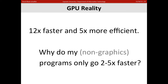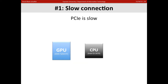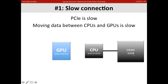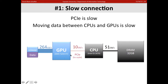There are a bunch of reasons for this. The first is that PCIe is slow — moving data between CPUs and GPUs is slow. CPU DRAM offers about 51 gigabytes per second, GPU memory offers 250 gigabytes per second, but the PCIe connection between these two devices is only 10 gigabytes per second. So moving data back and forth is the biggest single problem with GPUs today.